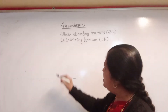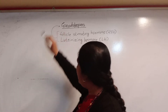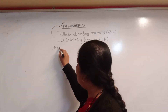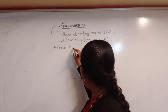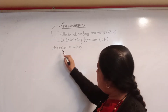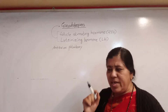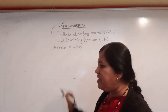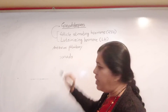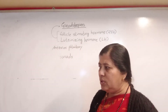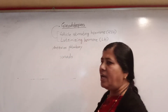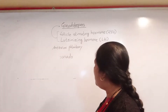These two hormones are called gonadotropins or gonadotropic hormones. These two hormones are secreted by the anterior lobe of pituitary, that is anterior pituitary. FSH and LH are called gonadotropins because these two hormones stimulate the growth and functioning of gonads.